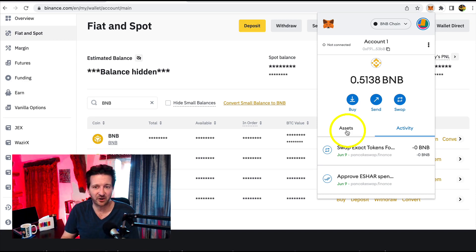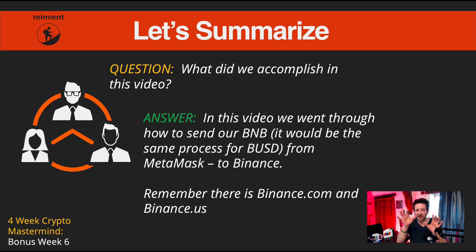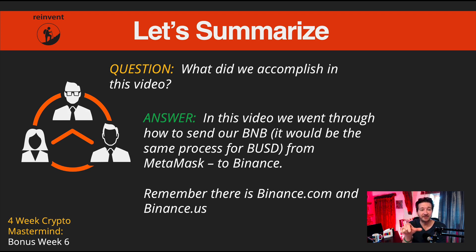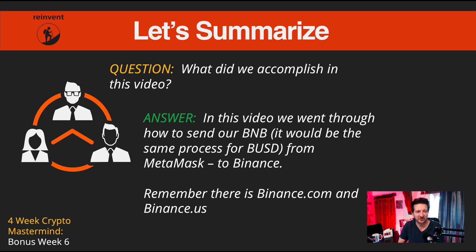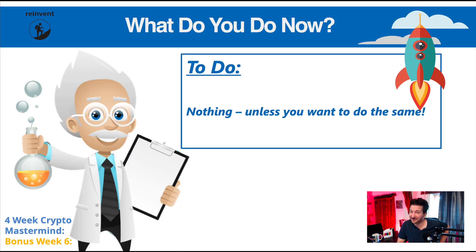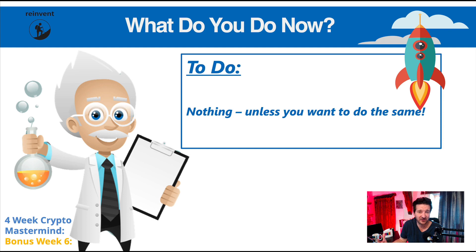This is essentially the exact reverse of what we did when we started this whole process. To summarise: we went through the process of how to send our BNB from MetaMask to Binance. It would be exactly the same process if it was BUSD or any cryptocurrency you want to send from MetaMask — you just grab the deposit address in Binance, put that address in MetaMask, and send. Do remember there is a binance.com and a binance.us account; they look a little different but the functionality is the same. In the next video, we'll look at how to convert that BNB in Binance to fiat — US dollars. Thank you.